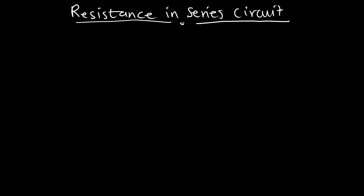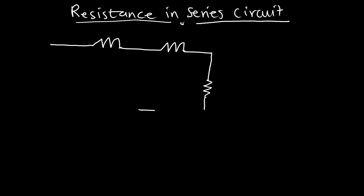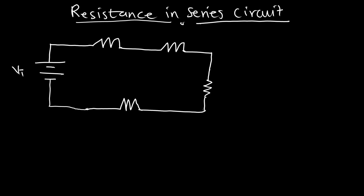Let's have our diagram. If we have a circuit connected in series with our resistors, we have our third resistor here, and this is our voltage source. So this is our diagram. We have our total voltage here. We have resistor 1, resistor 2, resistor 3, and resistor 4. This is a series connected circuit with four resistors.